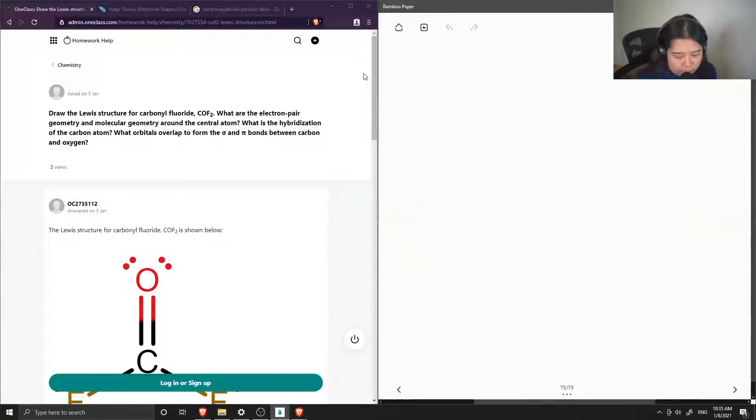Okay, so question number four is to draw the Lewis structure of carbonyl fluoride, COF2. What are the electron pair geometry and molecular geometry around the central atom? What is the hybridization? And what orbitals overlap to form the sigma and pi bonds between carbon and oxygen?